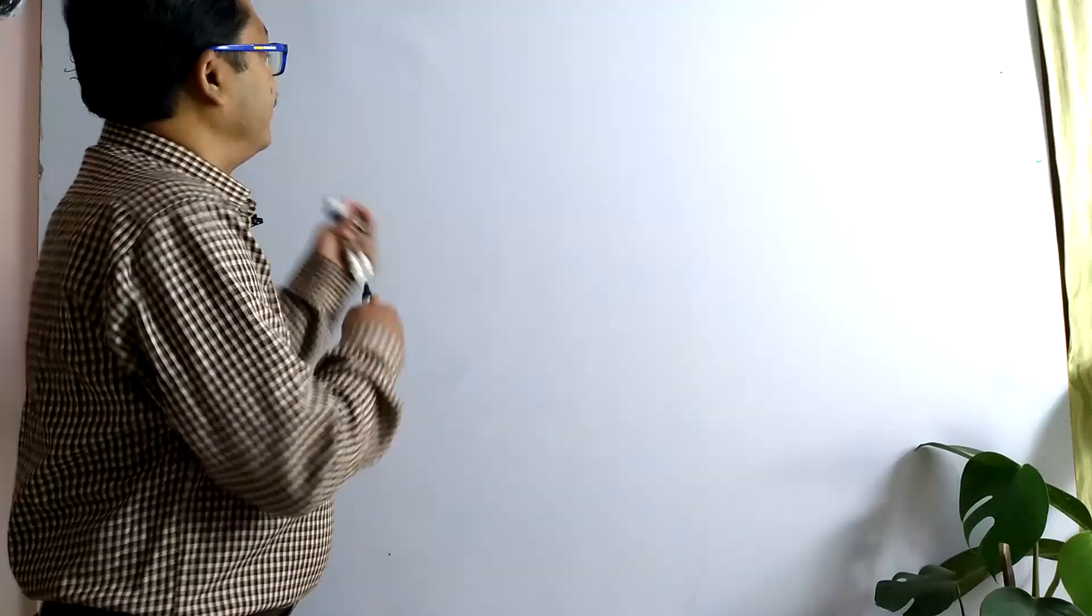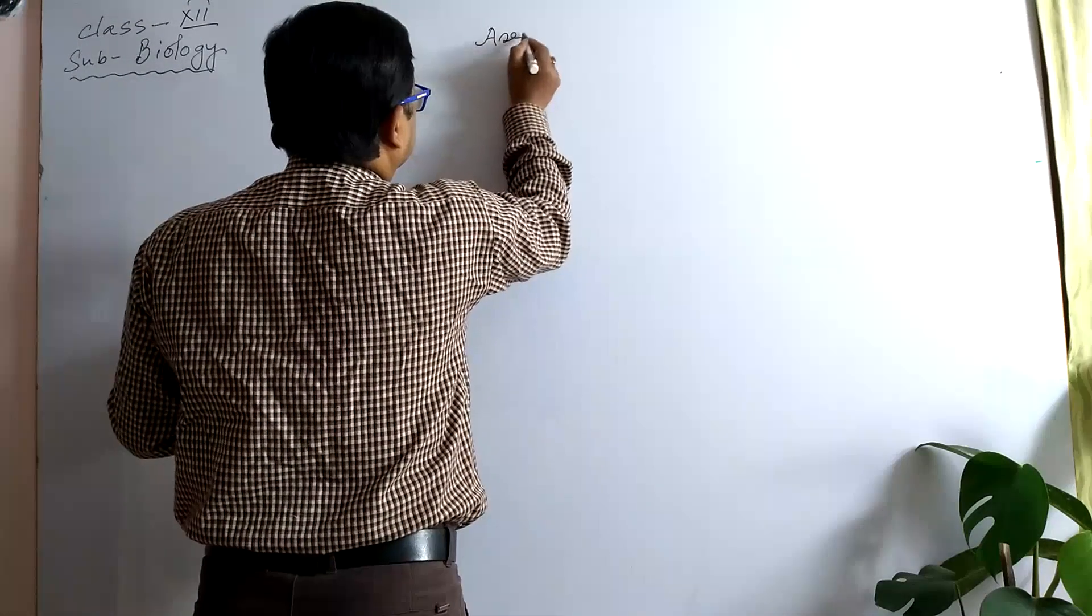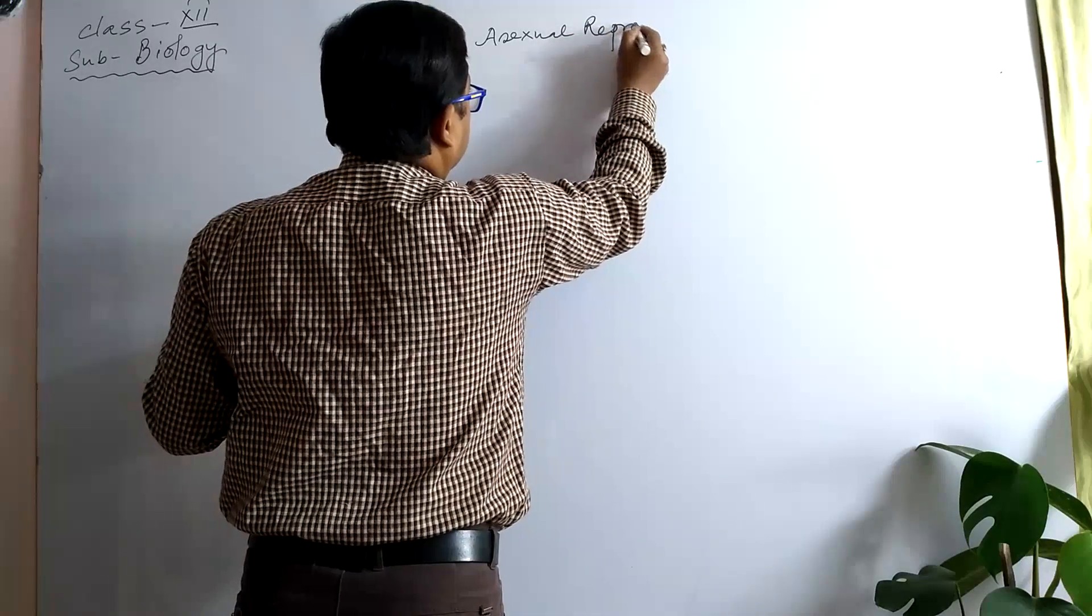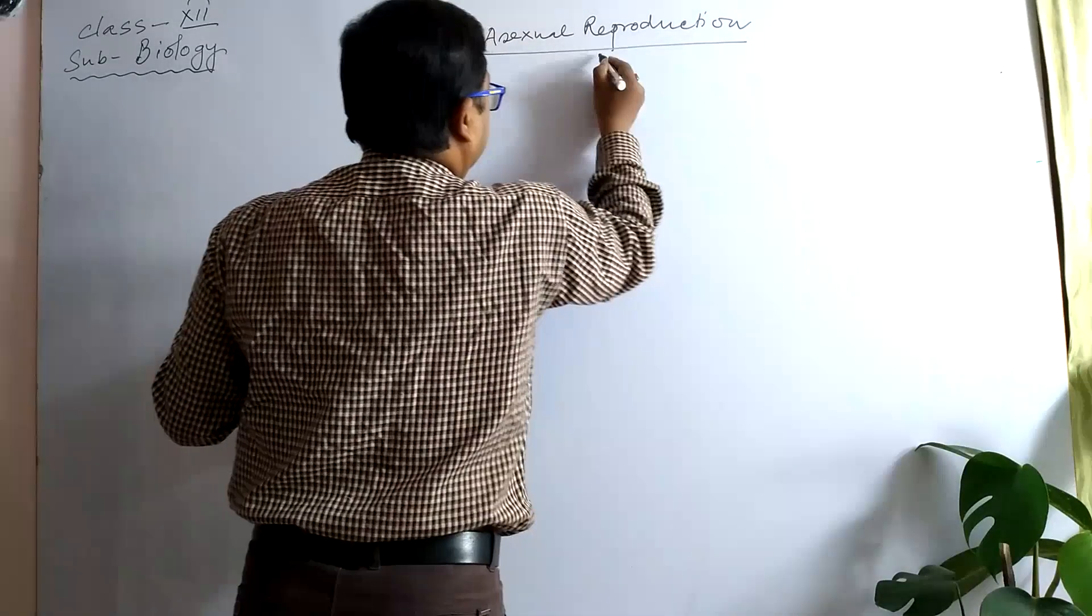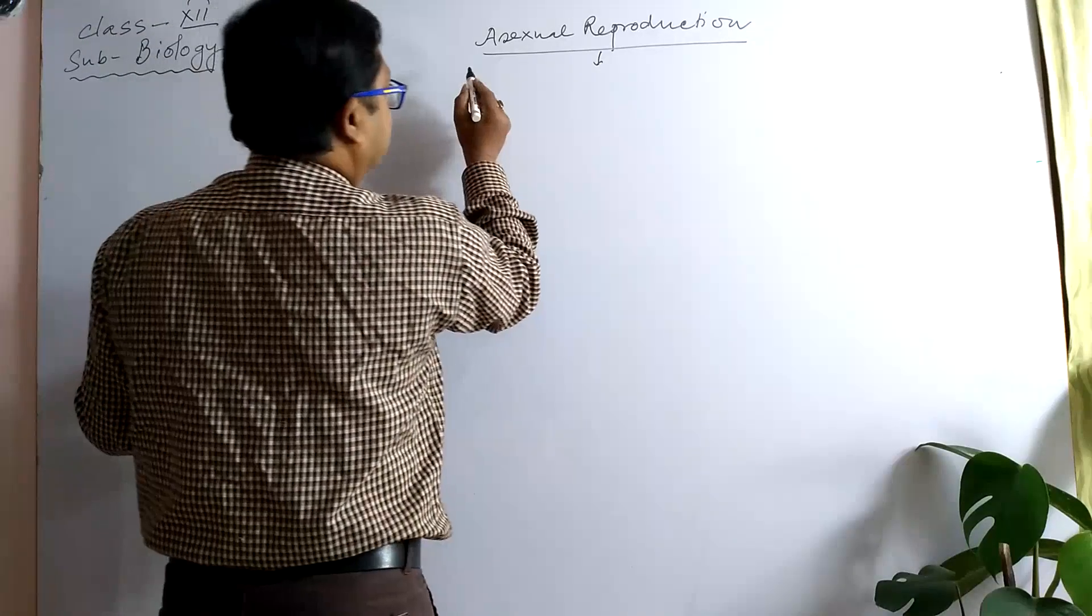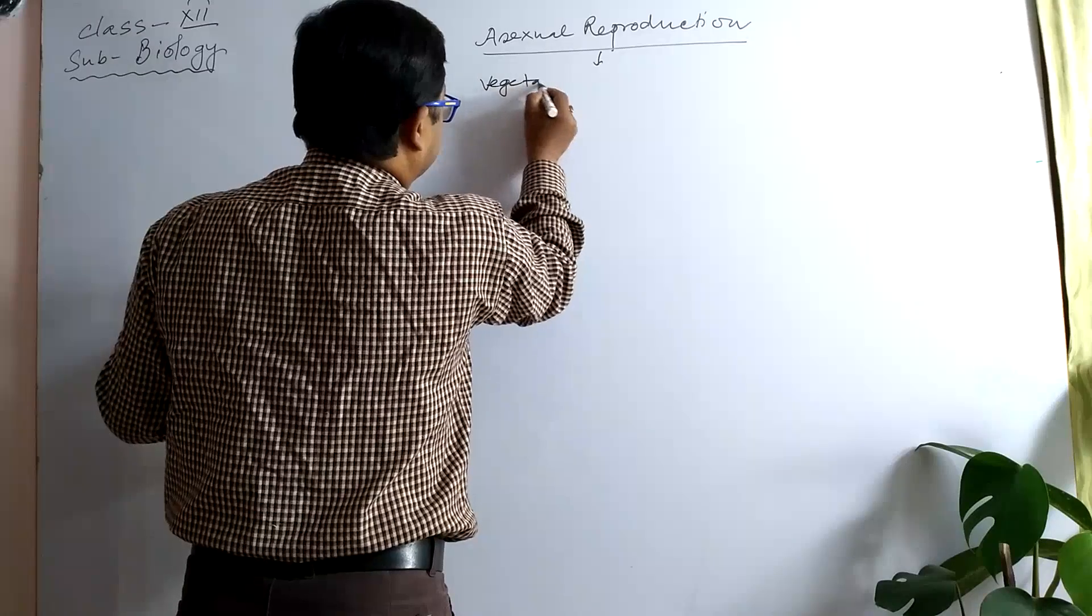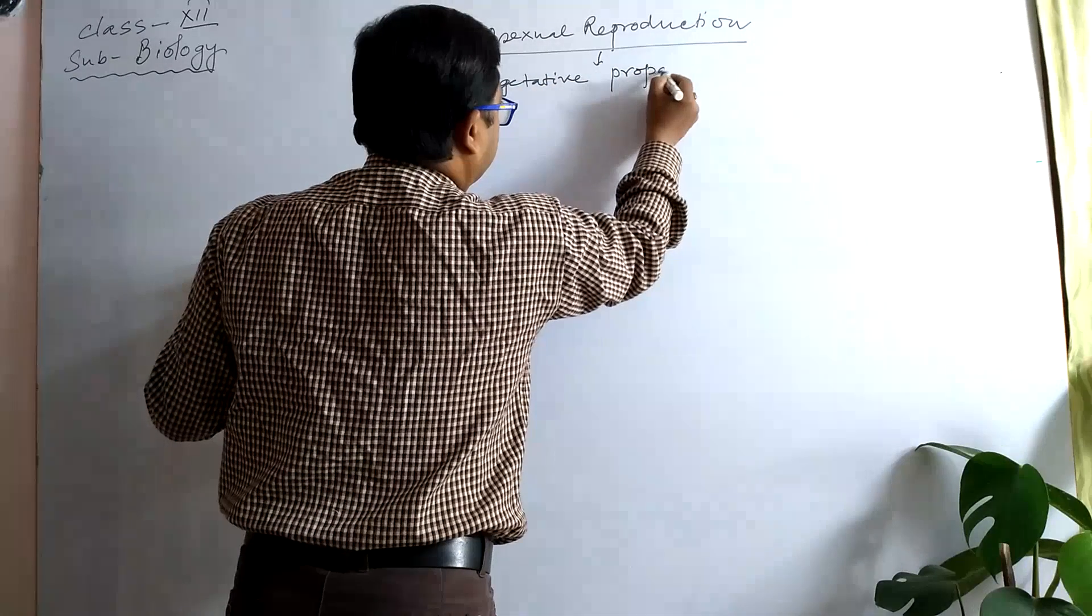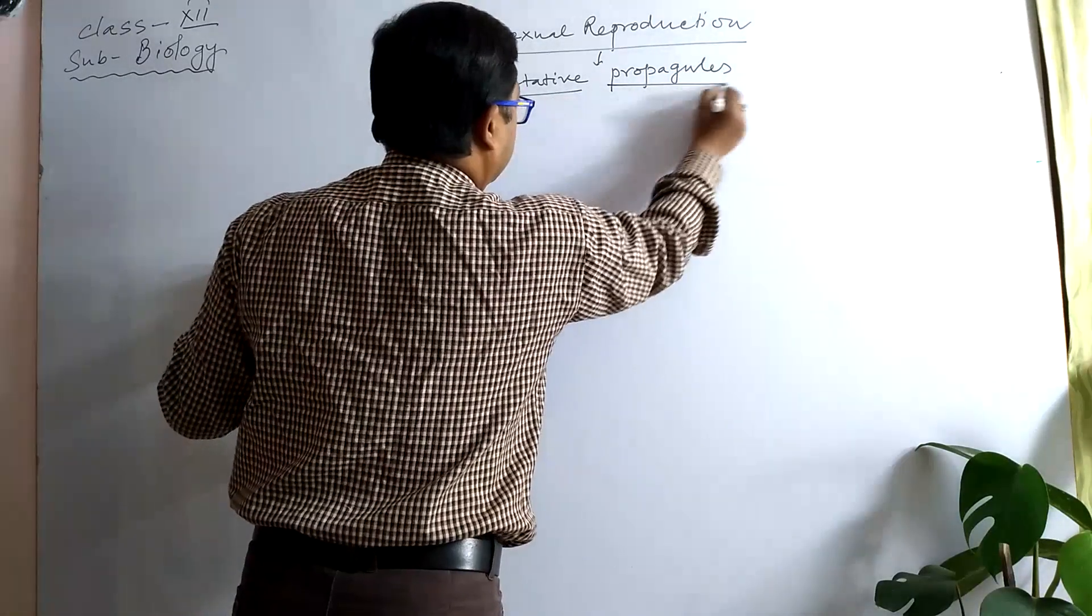Today's discussion will be asexual reproduction, and within asexual reproduction, today's discussed subject is vegetative propagules of plants.